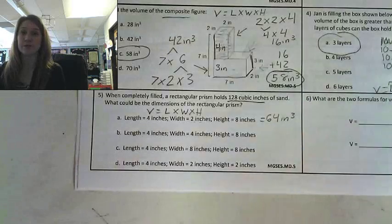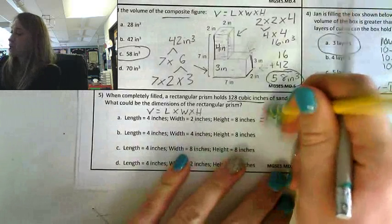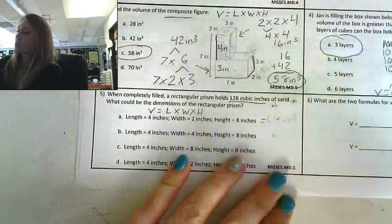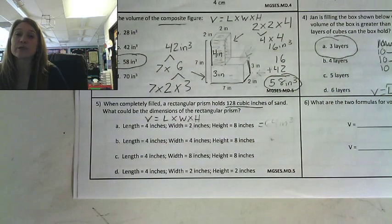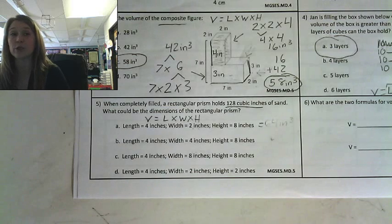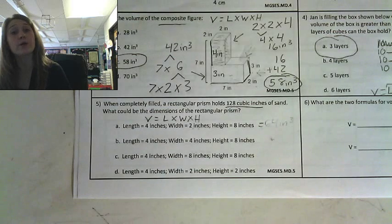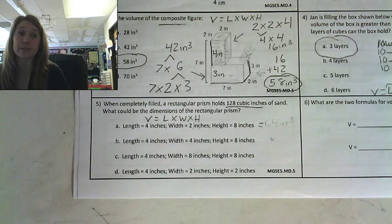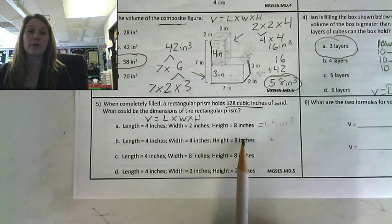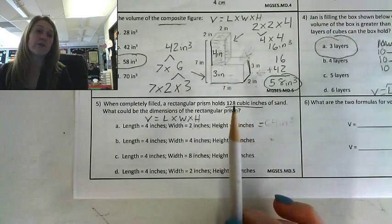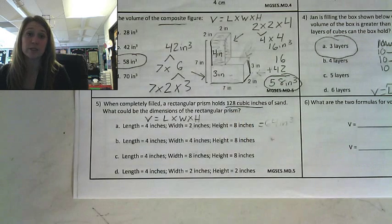Let's look at this next problem, number five. When completely filled, a rectangular prism holds 128 cubic inches of sand. What could be the dimensions of the rectangular prism? So what this is asking you to do is it's asking you to solve the volume of each of your answer choices to find the one that gives you 128 cubic inches.